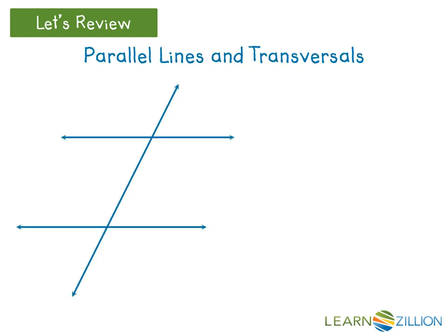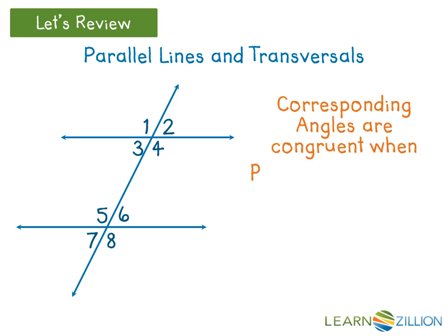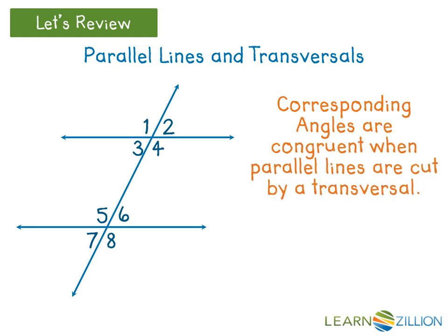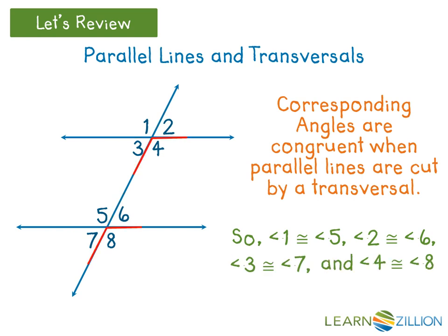When parallel lines are cut by transversals, we can see that corresponding angles are congruent. This means that angle 1 is congruent to angle 5, angle 2 is congruent to angle 6, angle 3 is congruent to angle 7, and angle 4 is congruent to angle 8.